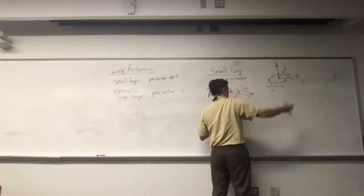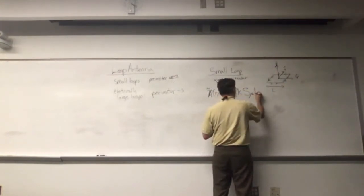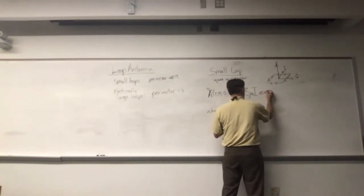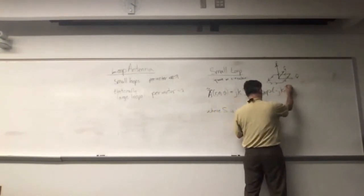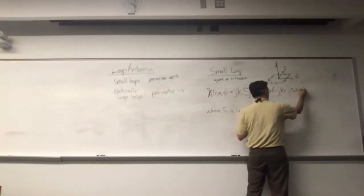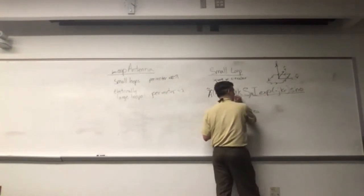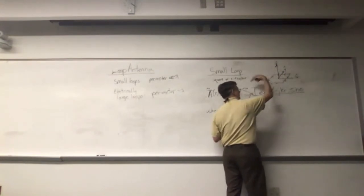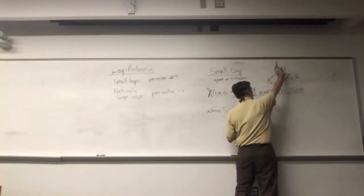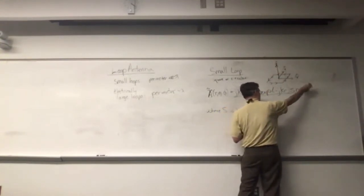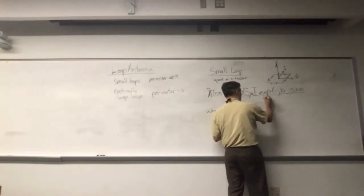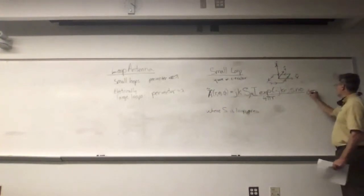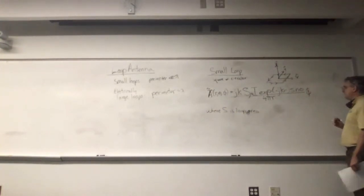Mu, the permeability of the surrounding medium, times current times S times e to the minus jkr over r, of course there has to be that, sine theta, really just like an electrically short dipole. We're going to have a peak when theta equals 90 degrees and a null in positive or negative z when theta equals 0 degrees. This is going to fall off over 4 pi r.